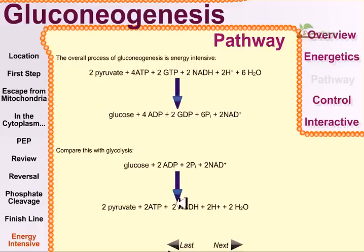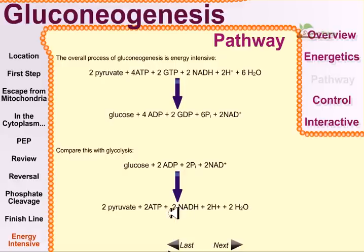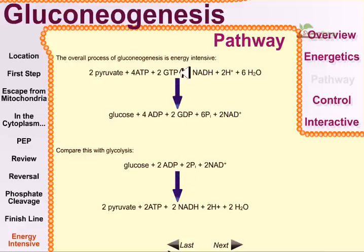Comparing with glycolysis: glycolysis invests two ADP, two inorganic phosphate, and two NAD⁺ to produce two ATP, two NADH, and two pyruvate. Those two pyruvate can further enter the TCA cycle to generate more ATP and NADH. The net difference is that gluconeogenesis has a net loss of six ATP equivalents (four ADP plus two GDP). Gluconeogenesis is the anabolic step requiring energy, while glycolysis is the catabolic step that produces energy.